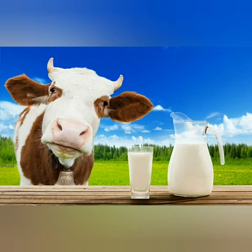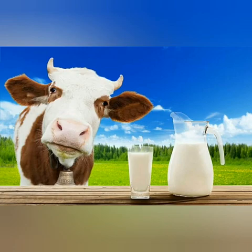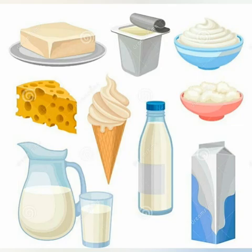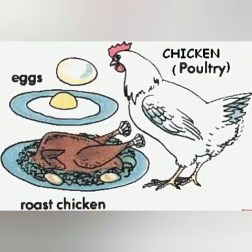How is the cow helpful to us? It gives us milk. From the milk, we get many dairy products — milk products like sweet, ice cream, butter, and cheese. What does the hen give us? Hen gives us eggs and meat, so hen is also helpful to us.